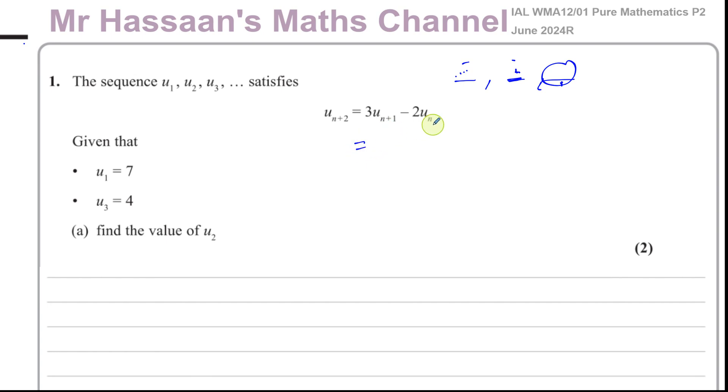For example here, you'd have to have the first two terms to find the third term. So the third term would be equal to 3 times the second term minus 2 times the first term. That's what that means. So if you want to find the second term and you know the first and the third term, you can just use this formula. So u₃ equals 3 times u₂ minus 2 times u₁.